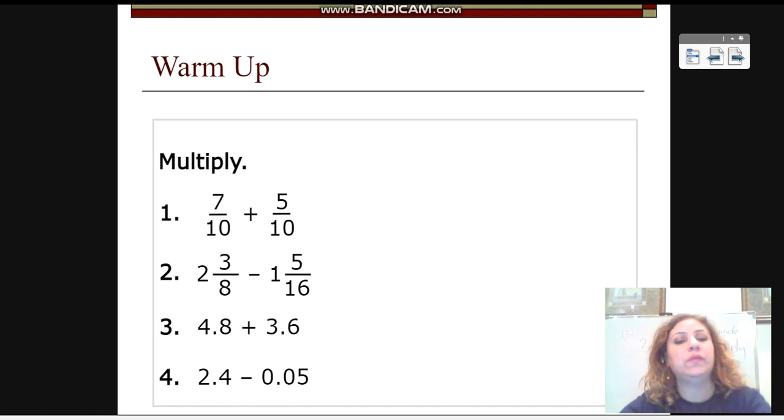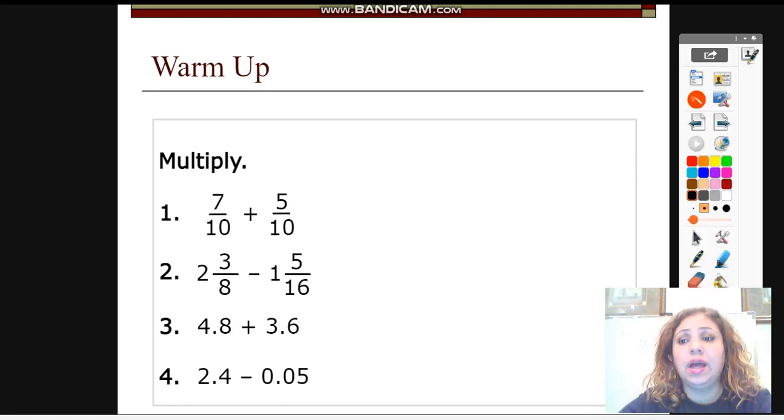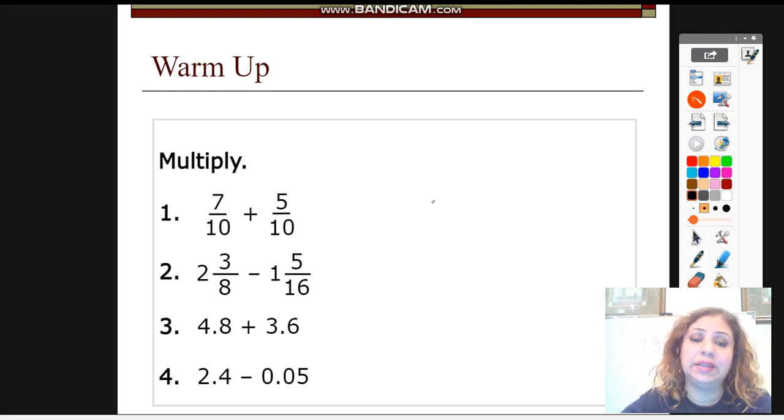So let's have this warm up first. Let us add these two numbers. Whenever you have two fractions to add, remember that you have to get the least common denominator. Here we have the same denominator, so I can just add the numerators and keep the denominator the same. So it's going to be 12 over 10 and I can simplify this by dividing 12 by 10 long division.